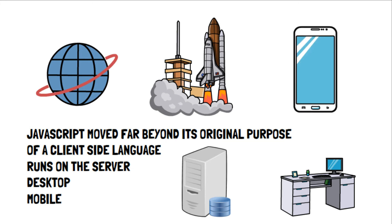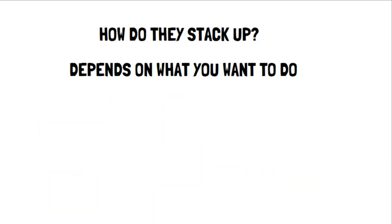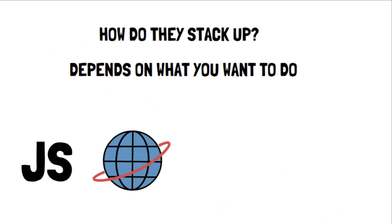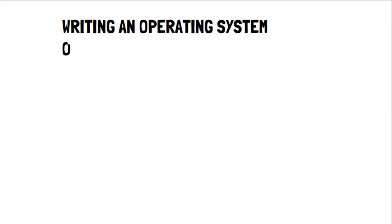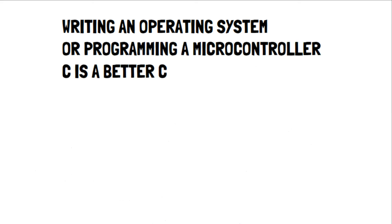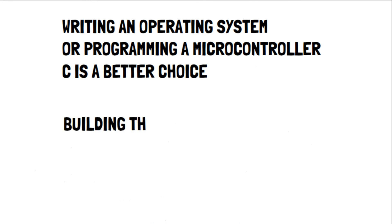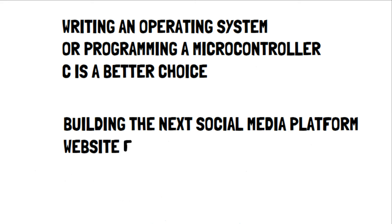So how do they stack up? Well, it depends on what you want to do. JavaScript is used mainly for programming World Wide Web applications, while C is used in applications related to systems programming. If you're doing things like writing an operating system or programming a microcontroller, then C is a better choice. If you are building the next social media platform or a website for a business, JavaScript is the obvious choice.